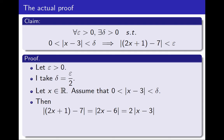And then the absolute value of 2x plus 1 minus 7, I copy the algebra from before, it's going to be equal to 2 times the absolute value of x minus 3. By my assumption, this is smaller than 2δ, and by my choice of δ, this is ε. And look at that! I have proven that the distance between 2x plus 1 and 7 is smaller than ε, as needed. That's it! That completes the proof.